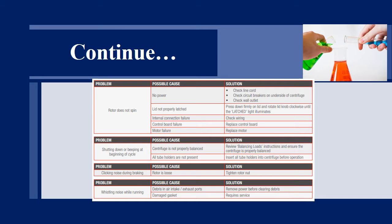Third cause is internal connection failure, so we have to check the wiring. Rotor does not spin maybe due to control board failure, so we have to replace the control board. Rotor does not spin, it can be possible that the motor has failed or there is damage in the motor, so we have to replace the motor.